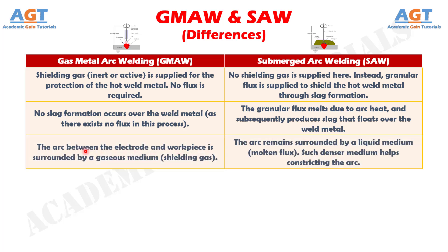Number 3: In gas metal arc welding, the arc between the electrode and workpiece is surrounded by a gaseous medium, or shielding gas. Whereas in submerged arc welding, the arc remains surrounded by a liquid medium, or molten flux. Such a denser medium helps in constricting the arc.